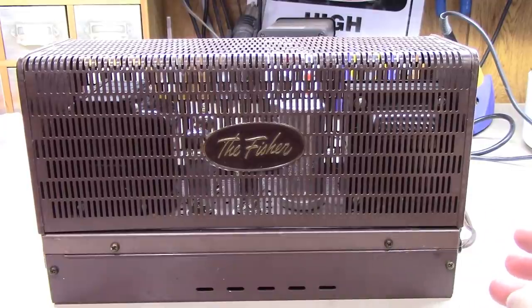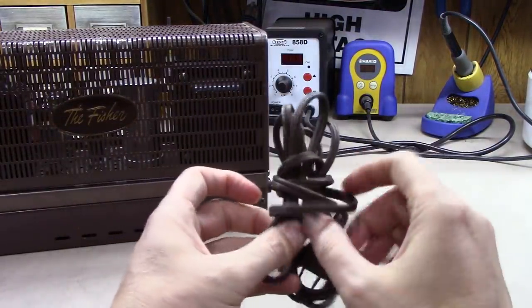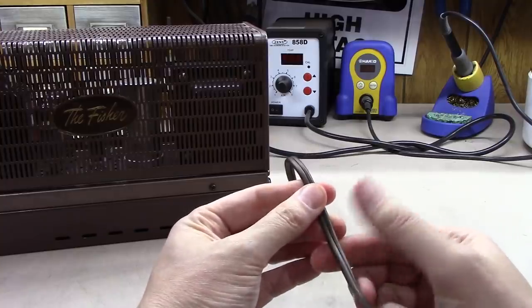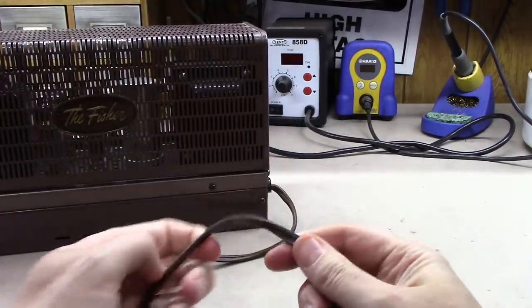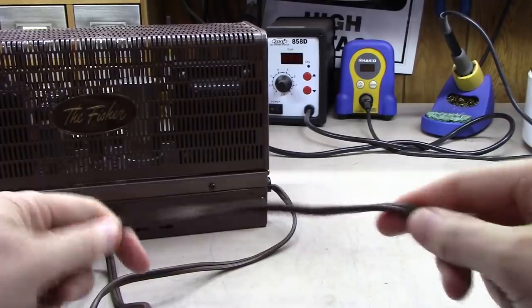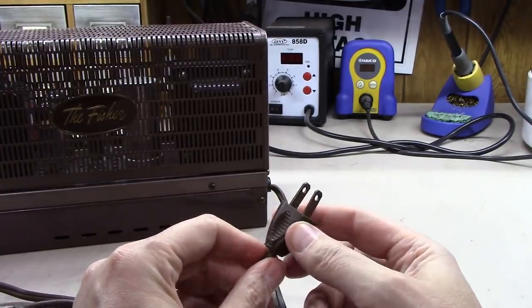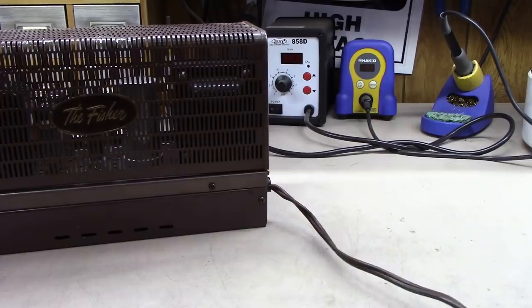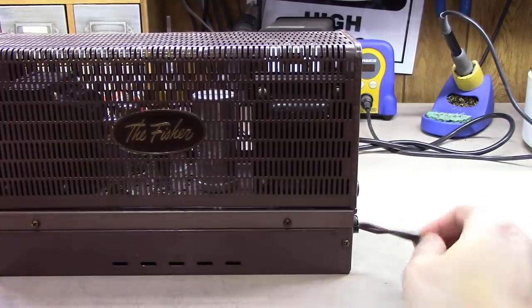First thing I would do, if I were you, would be to inspect the power cord. One thing I see a lot of is power cords that somewhere along the way have been cut and taped back up and often many times not even soldered. So always check the cord out all the way through. I'm looking to see if it's frayed, broken. This one happens to be in great shape, very pliable, not brittle at all. Check your cord. If there is something wrong with the cord, you definitely want to consider replacing that.